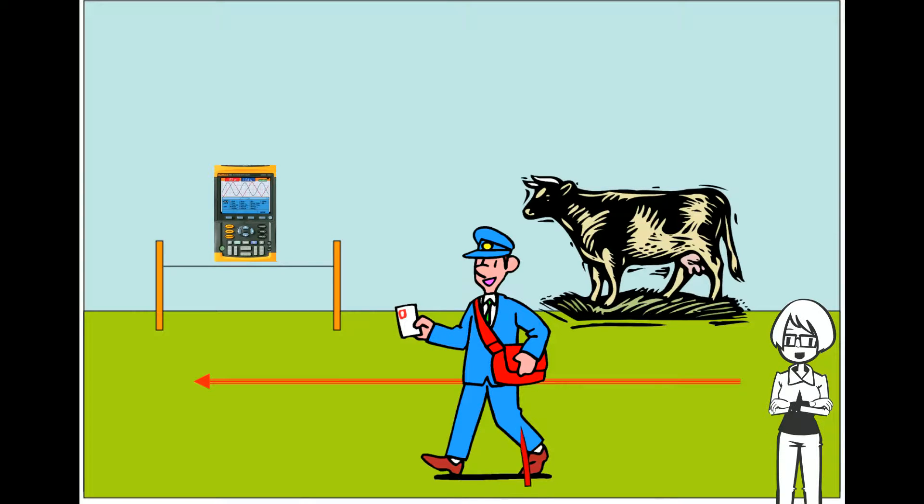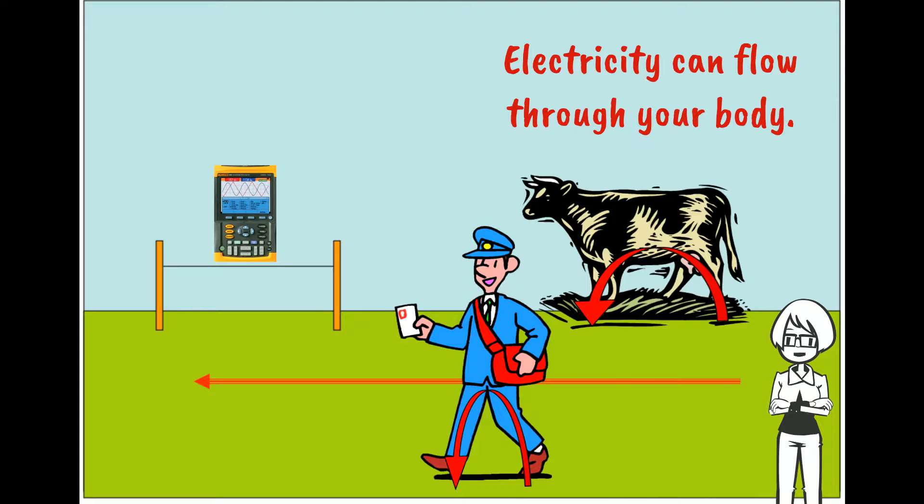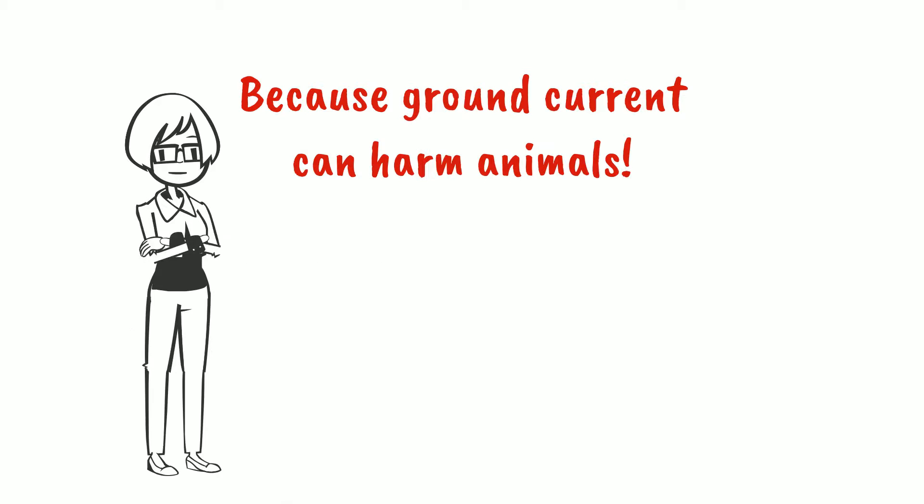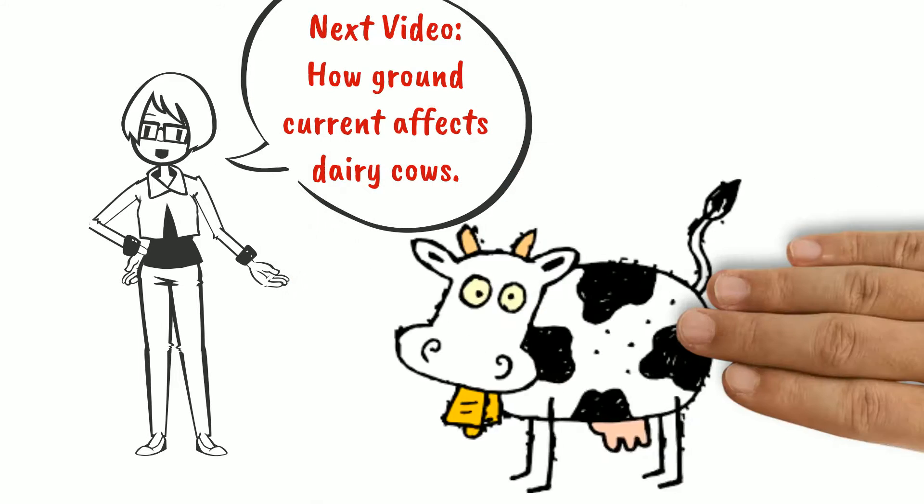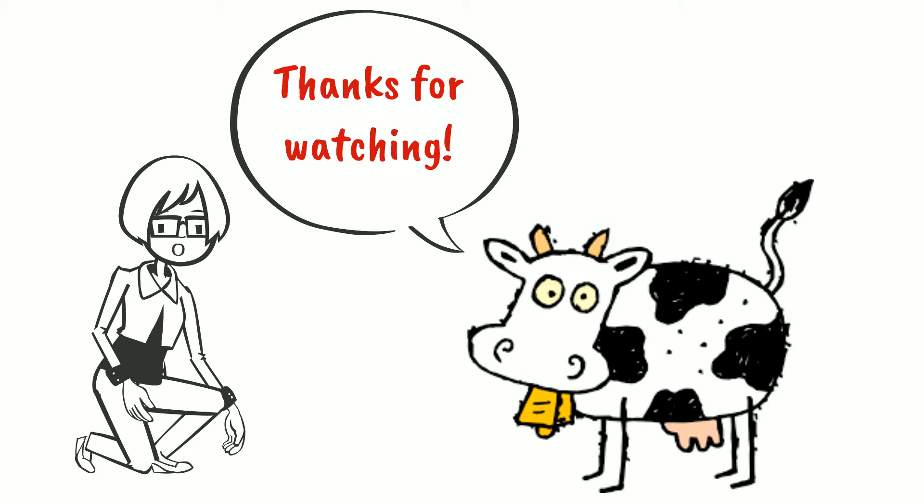A person or animal in contact with the earth can have electricity flowing through his or her body. So, why is this important? Because it can harm animals. Watch my next video on how ground current affects dairy cows. Thanks for watching.